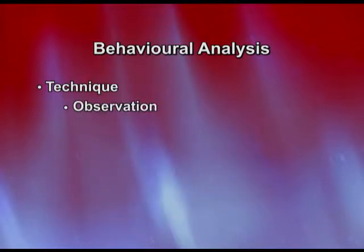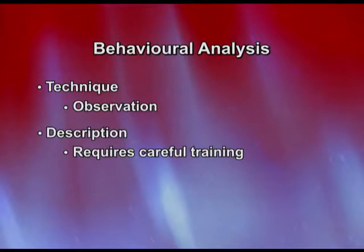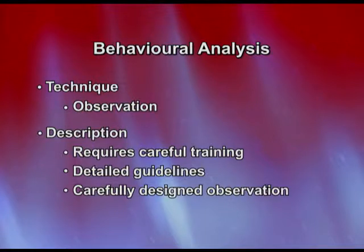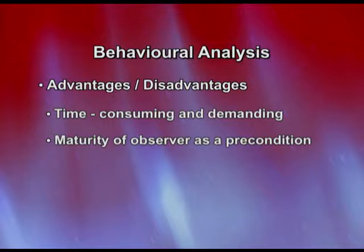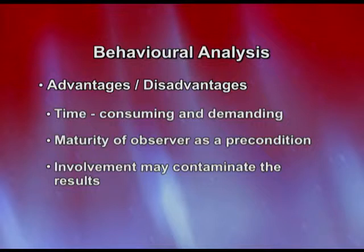The second behavioral technique is observation, which requires careful training as a prerequisite. Detailed guidelines are required as to what behavior is being measured and it has to be carefully designed. Disadvantages include that it is very time-consuming and demanding. Maturity of the observer is a precondition — there should be no subjective biases, and the observer must know what they are measuring without their own value judgments or impressions. The presence of the observer may also contaminate the test results. Normal observation and observation as a scientific method are different because the latter follows a systematic process, but even then a lot of training and grooming is required.